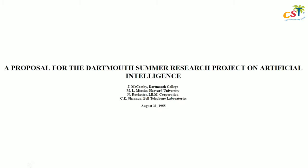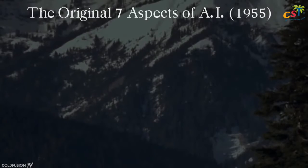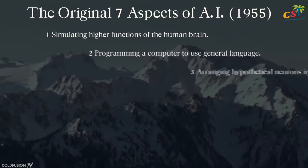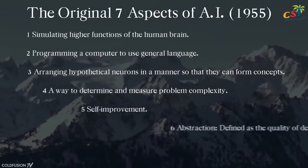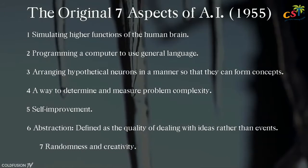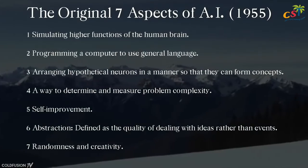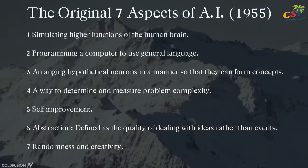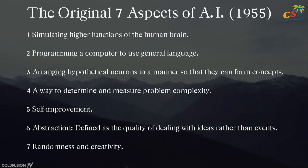To elaborate further, the 1955 proposal defines seven areas of AI. Today there's surely more, but here are the original seven. One, simulating higher functions of the human brain. Two, programming a computer to use general language. Three, arranging hypothetical neurons in a manner enabling them to form concepts. Four, a way to determine and measure problem complexity. Five, self-improvement. Six, abstraction — defined as the quality of dealing with ideas rather than events. Seven, randomness and creativity.